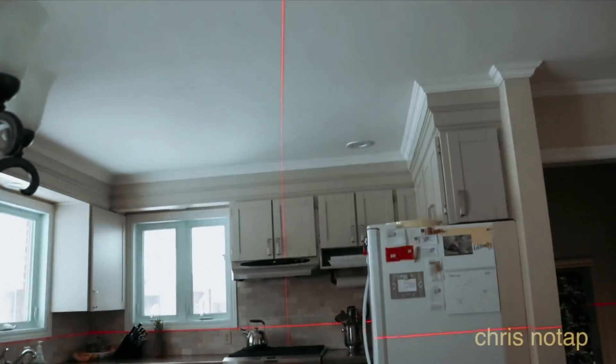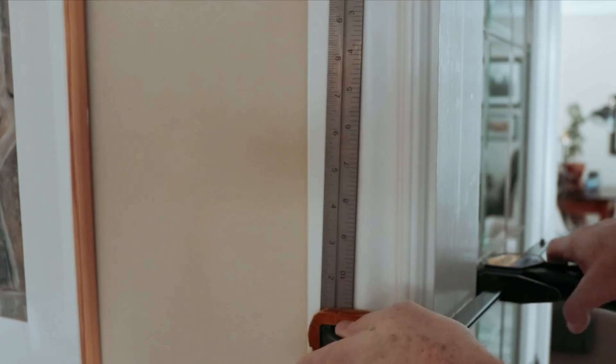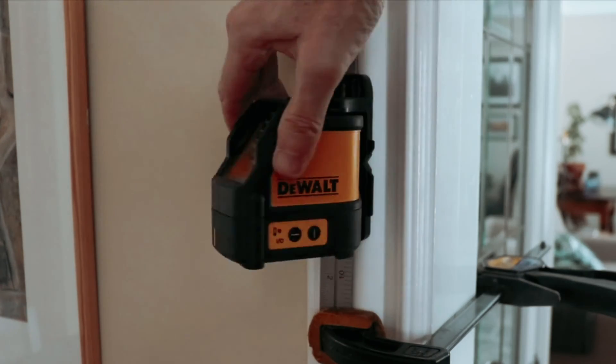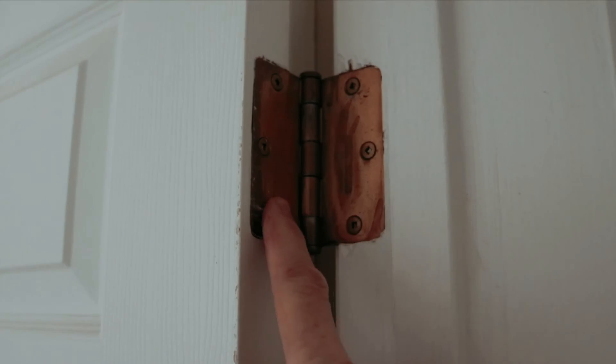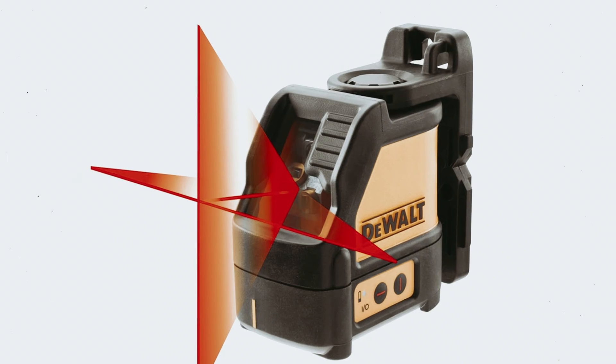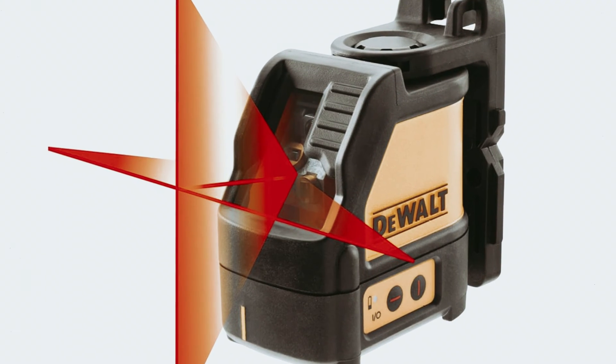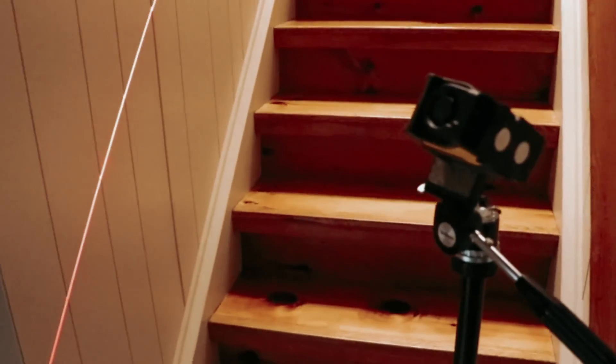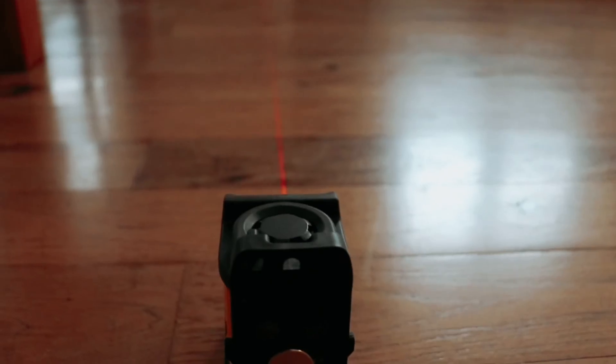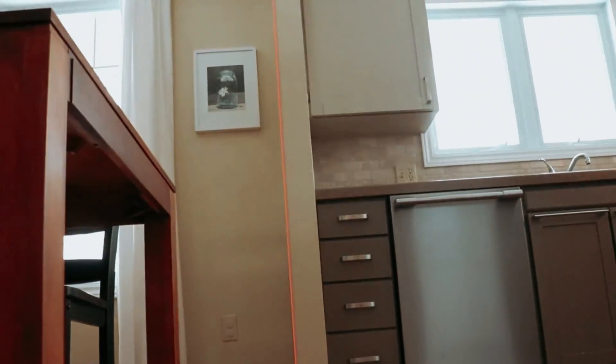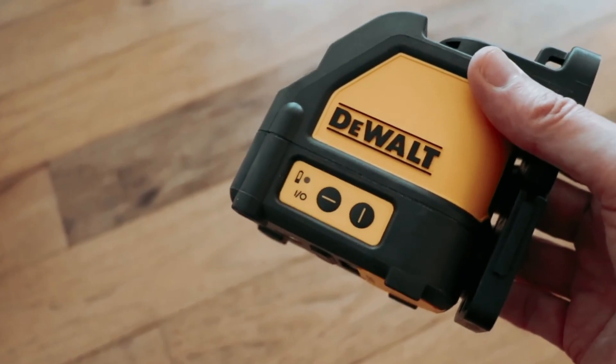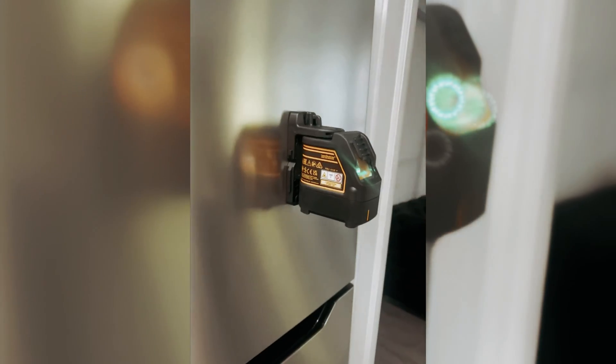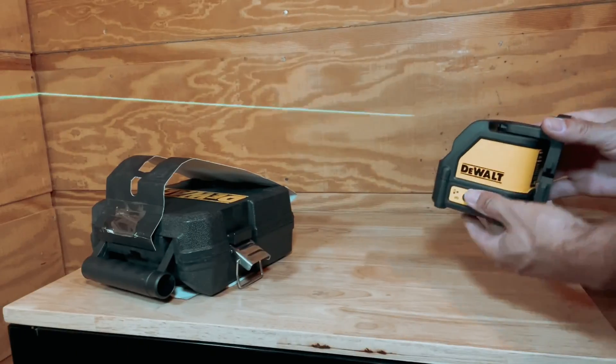The quarter-inch, 20-thread mount allows for attachment to a tripod for enhanced stability and accuracy during projects. Featuring a class 2 laser with an output power of less than or equal to 1.3 milliwatts at 630 to 680 nanometer, this laser level provides precise alignment with an accuracy of approximately 1/8 of inch at 30 feet. The durable storage case included ensures safe transportation and storage of the tool between uses. Overall, the DEWALT LINE Laser is a top-quality laser level that combines robust construction, powerful performance, and user-friendly features to meet the needs of professionals and DIY enthusiasts alike.